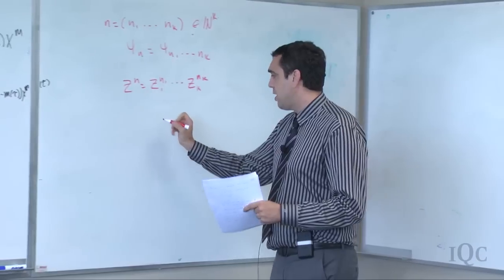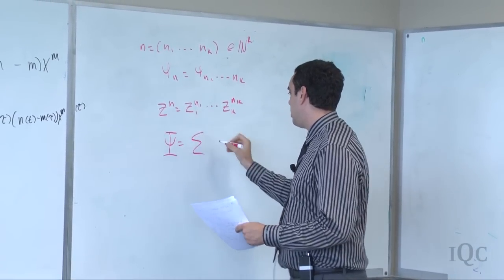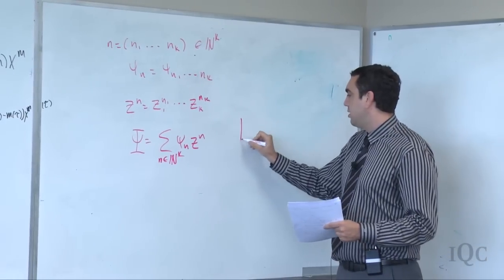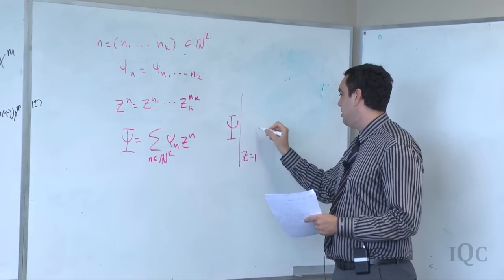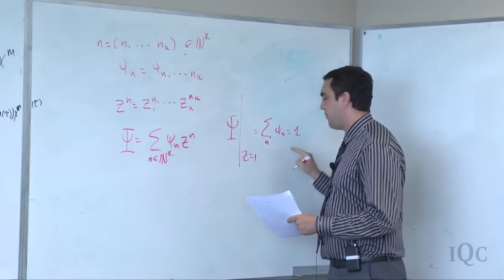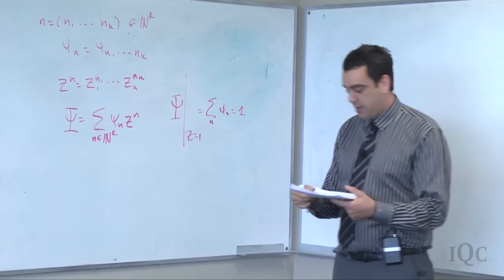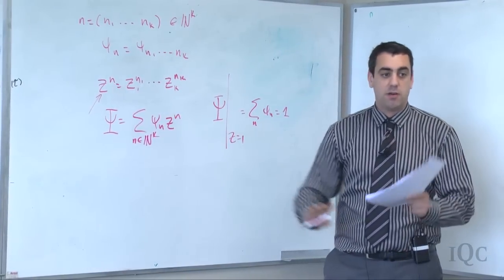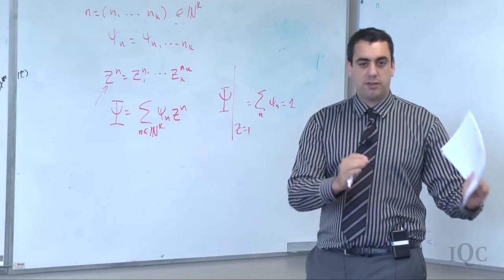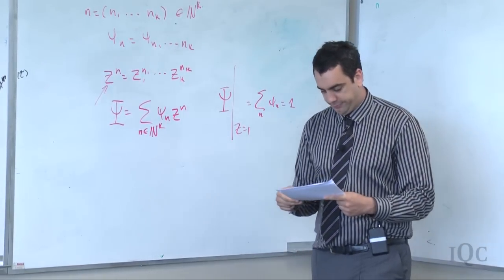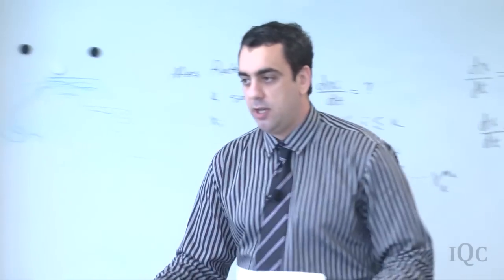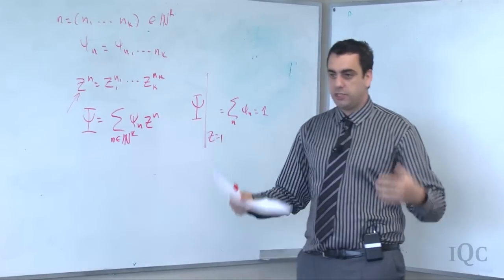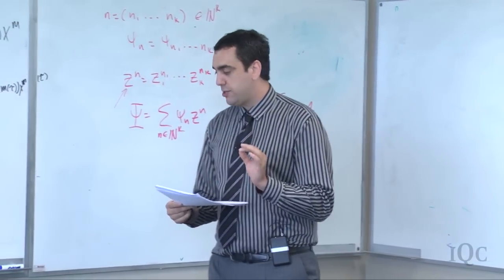We write a state as a sum over all n of ψ_n z^n. Integrating (setting z=1) gives the sum over n of ψ_n equal to 1 for a valid state. A single monomial is a pure state — you're 100% sure of the starting configuration, like knowing exactly how many rabbits and wolves you have. That's different from a pure state in quantum mechanics: in stochastic mechanics, any superposition means you have some probability distribution, not a coherent superposition.